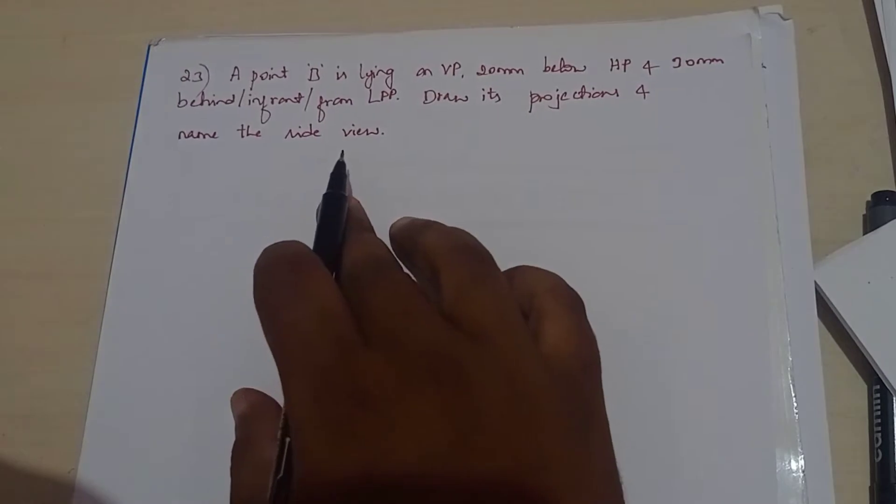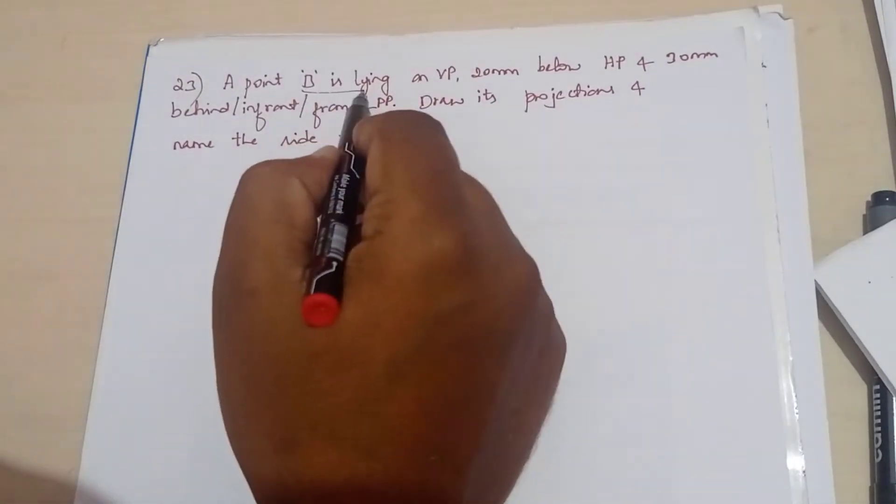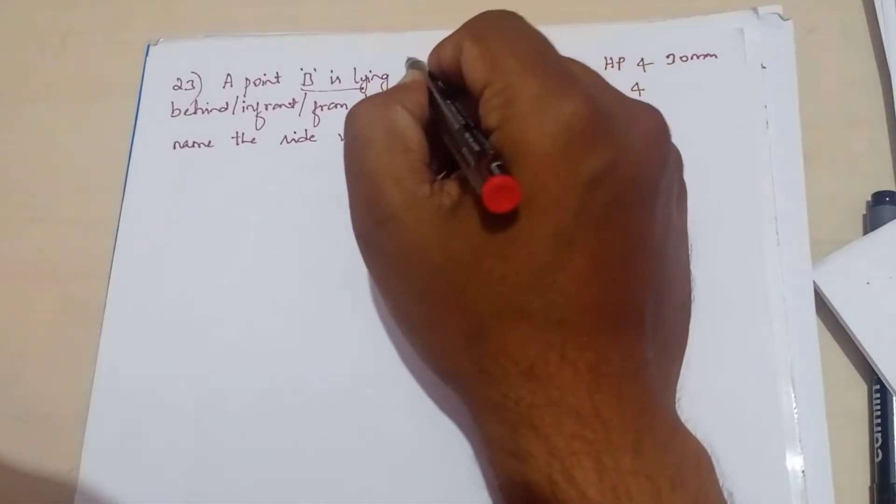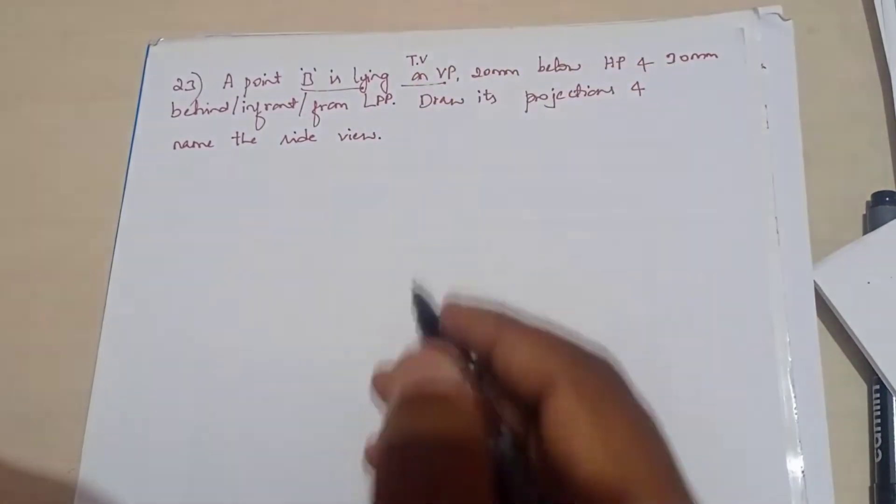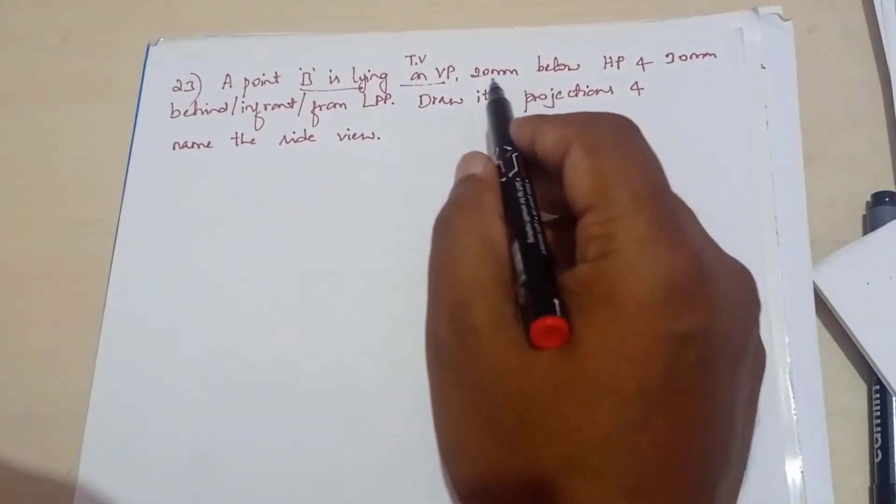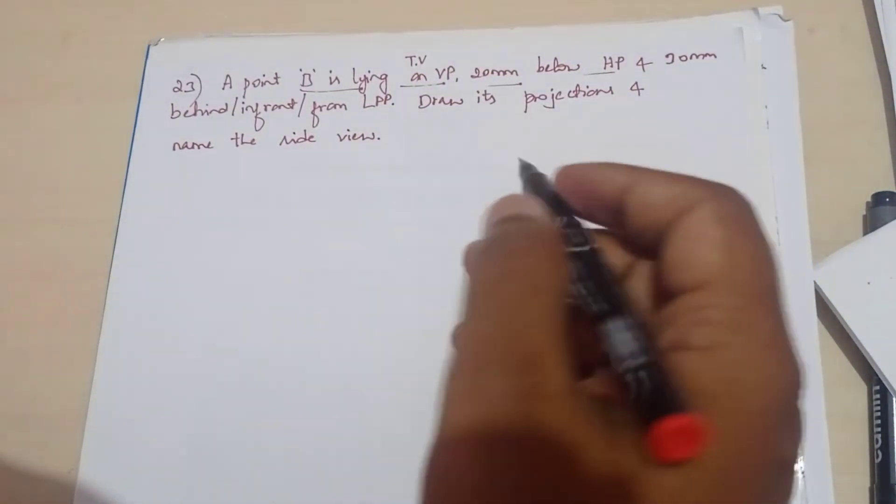Now we look into the next type of problem. Point B is lying on HP. On HP means it is the top view, so the top view we should mention on the XY line. 20 mm below HP means two chances - either below HP means 20 mm below HP, which means it is a front view.